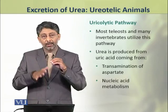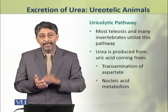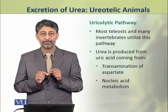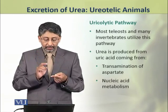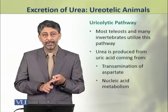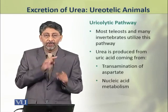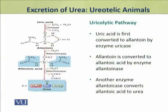Now we shall discuss the ureolytic pathway. Most teleosts and many invertebrates utilize this pathway. Urea is produced from uric acid, which comes from transamination of aspartate and from nucleic acid metabolism. In the ureolytic pathway, uric acid is first converted to allantoin by the enzyme uricase, and allantoin is then converted to allantoate by the enzyme allantoinase.